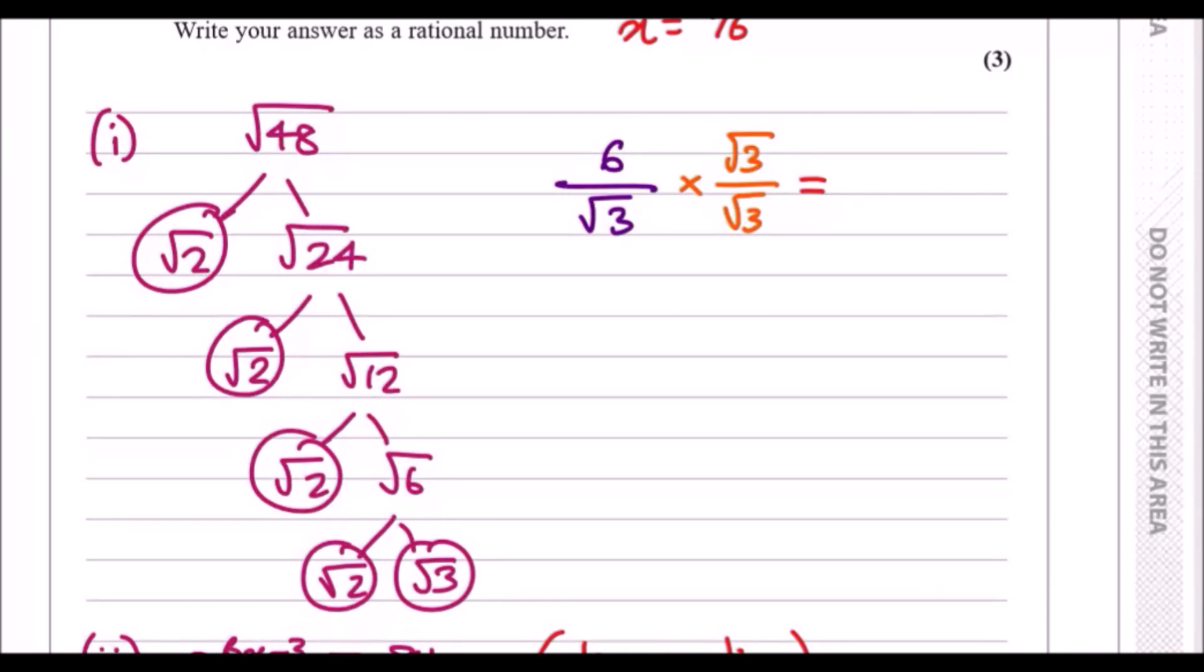If you get two similar surds like root 2 and root 2, these can combine to make a whole 2. These two root 2s again combine to make a whole 2, so now we've got 2 times 2 which is 4, and finally root 3. So the answer here will be 2 times 2 times root 3, which is 4 root 3. Easy stuff.